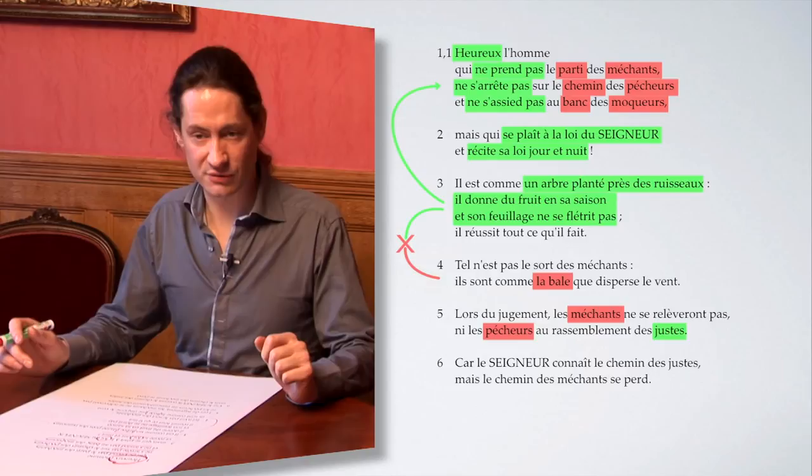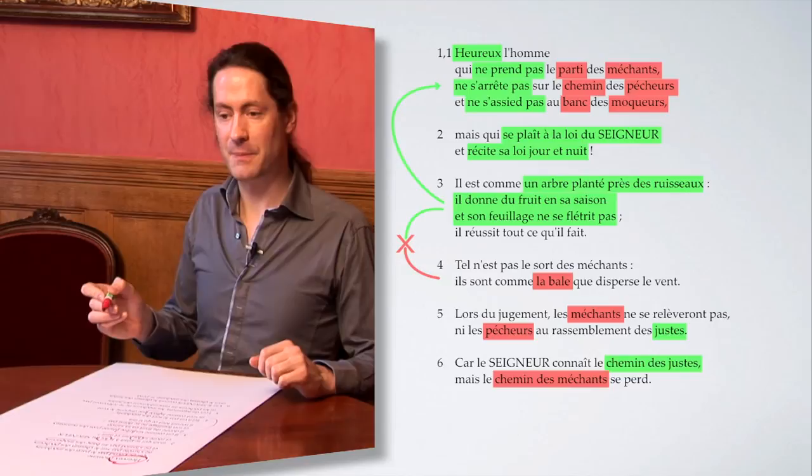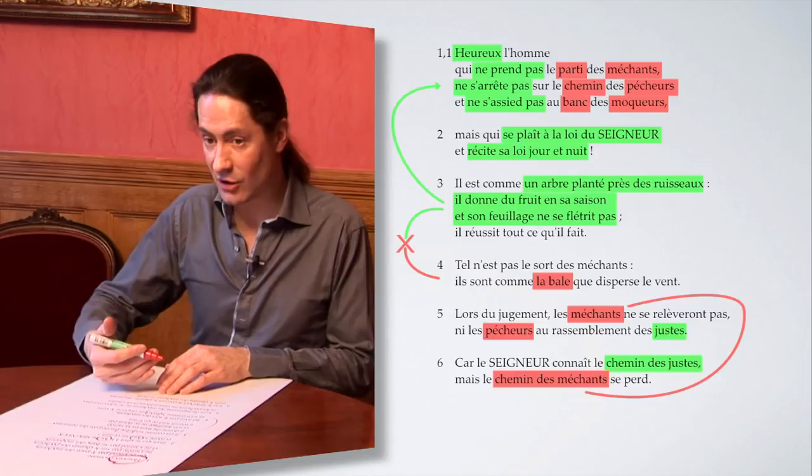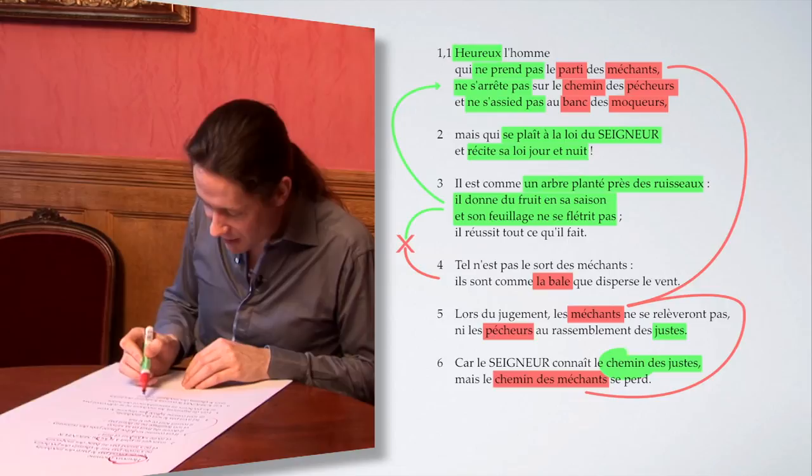Cette opposition fondamentale entre impie et juste est réitérée au dernier verset, le verset 6, qui oppose de nouveau le chemin des justes avec le chemin des méchants. Le dernier verset emploie le même terme que le verset précédent, mais également le même terme que ce qui était utilisé dès le premier verset. La boucle est bouclée, le poème achevé.